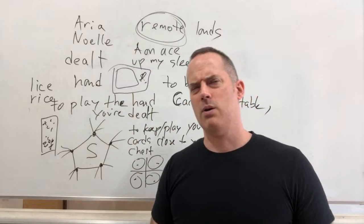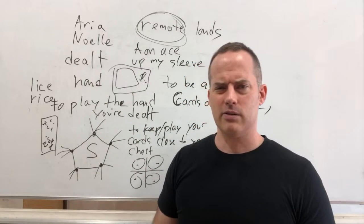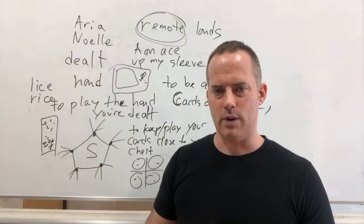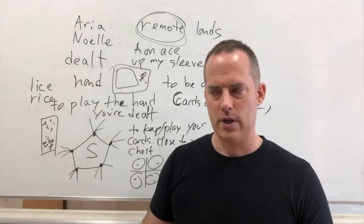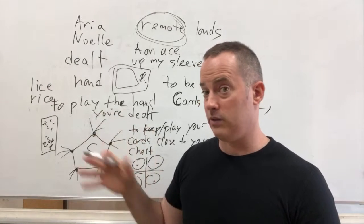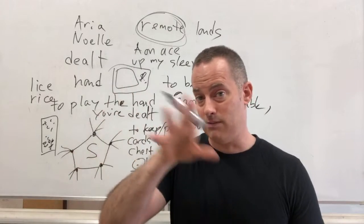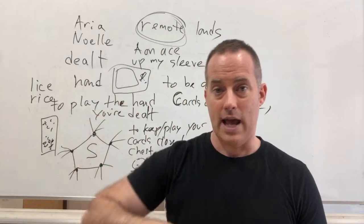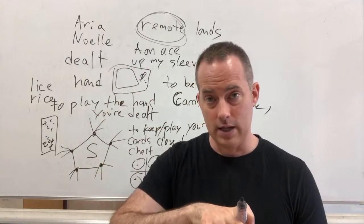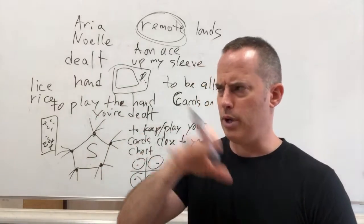Grammar is not such a big deal for Japanese speakers. Some things are the same — for example, the adjective comes before the noun, so in English you'd say 'a red car' and in Japanese 'akai kuruma.' But the verb comes at the end of the sentence in Japanese — so it's like saying 'pizza eat' instead of 'eat pizza.'